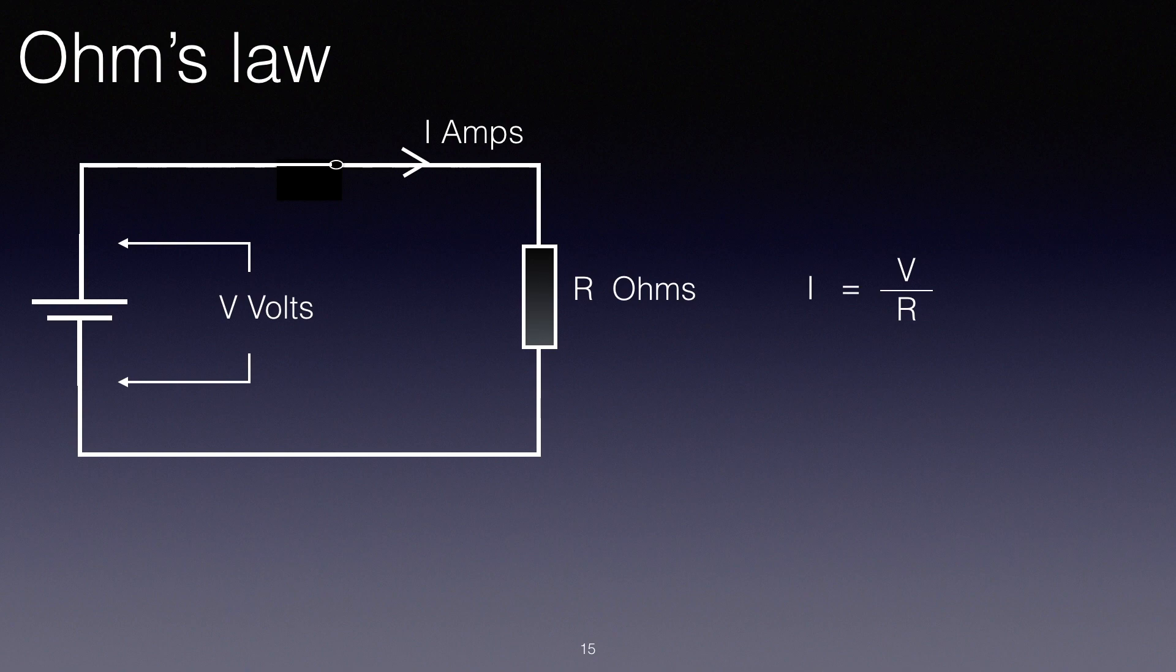So this equation is telling us that the more volts you've got, the more current, but the more resistance you've got, the less current. And this fits in with what we know.